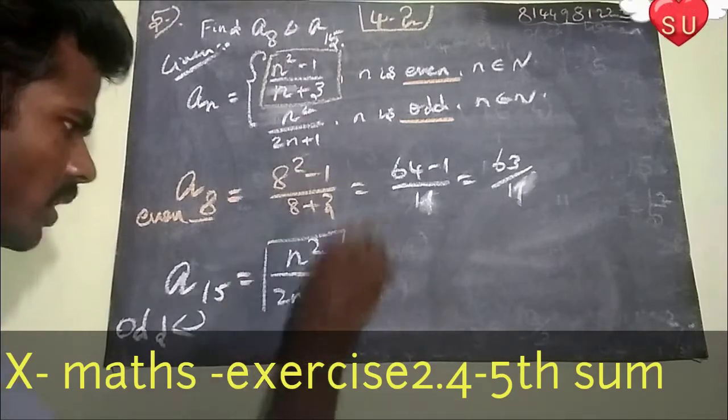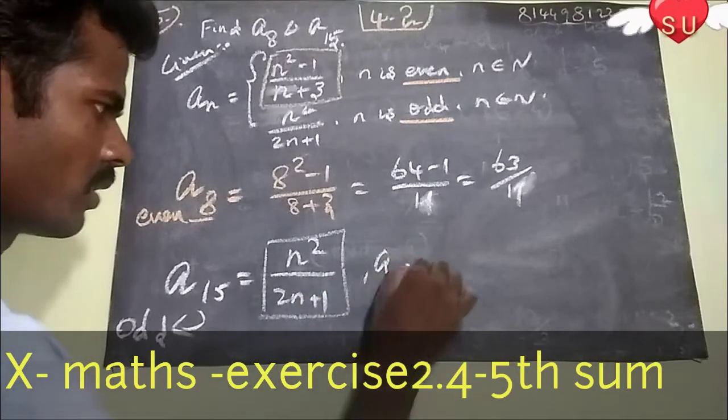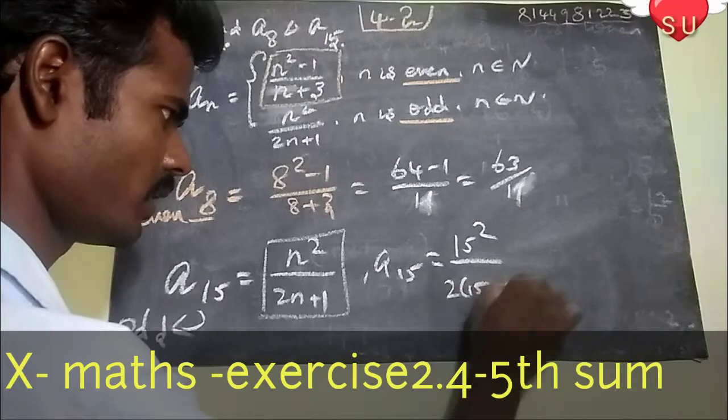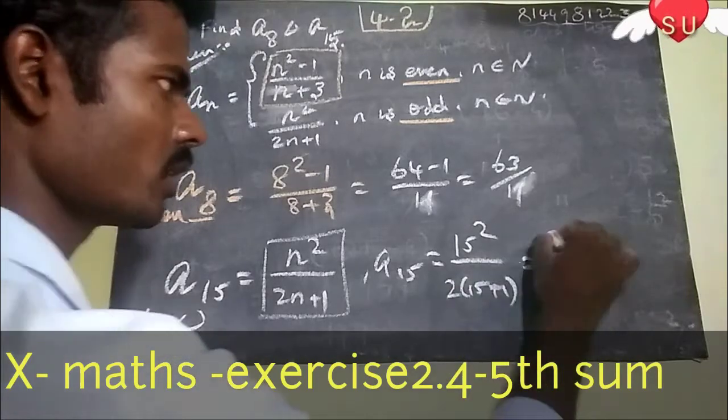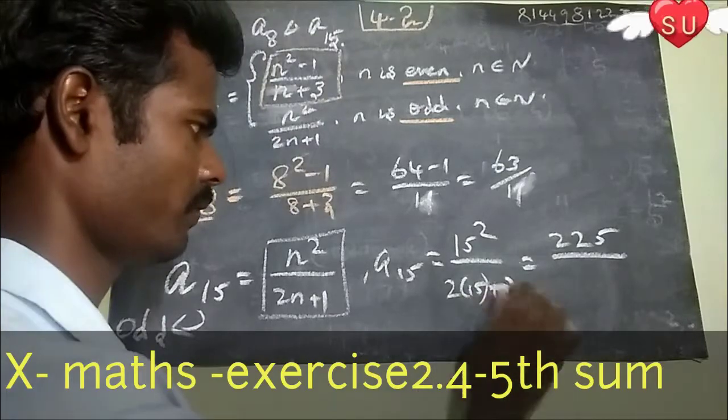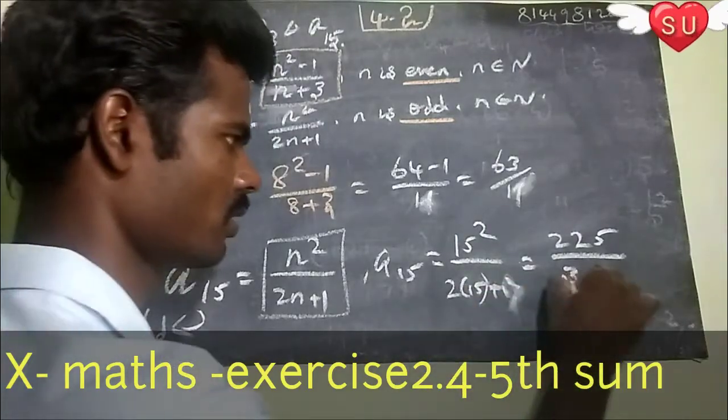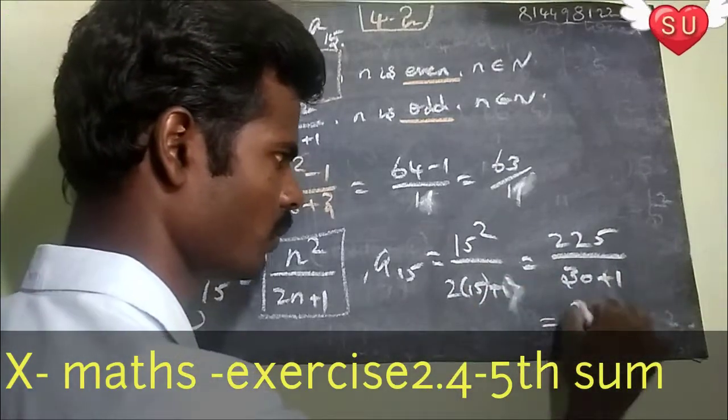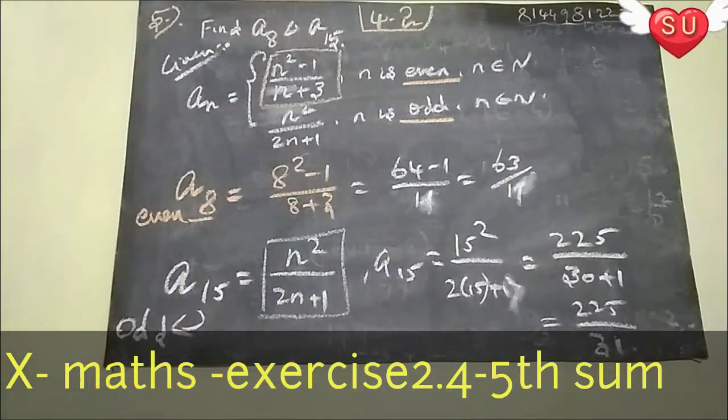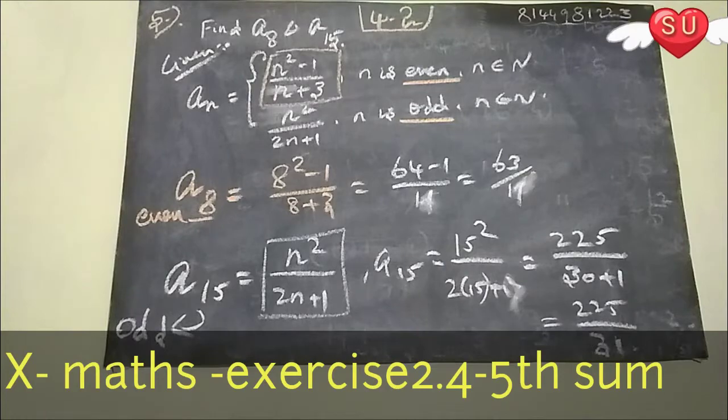So, N squared divided by 2N plus 1. So, 15 squared divided by 2 into 15 plus 1. 15 squared is 225, 2 times 15 equals 30 plus 1. 225 divided by 31. Then, this is A15.